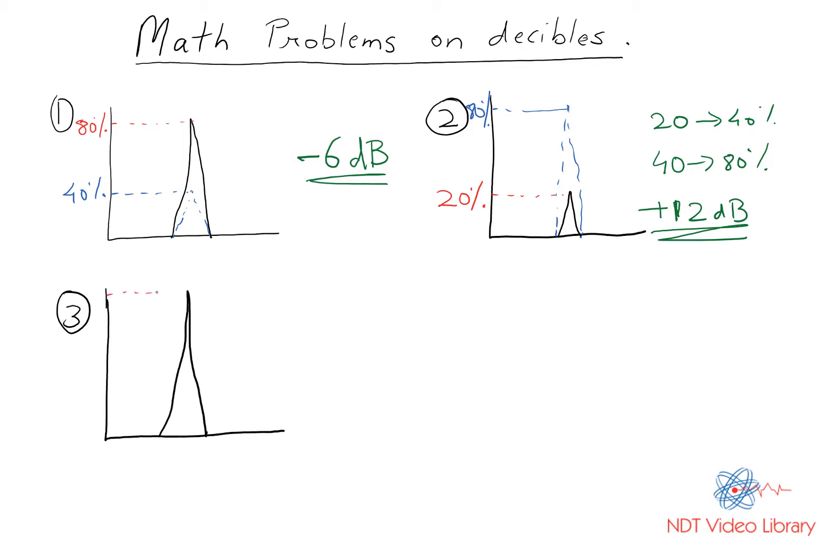Third example: consider the signal amplitude where originally it's 100 percent screen height and then I bring it down to 10 percent. 100 to 50 is 6 dBs, 50 to 25, 25 to 12.5, 12.5 to 6.25 - but we missed 10, so this doesn't work for these types of problems.